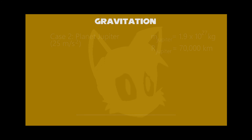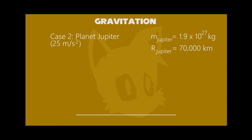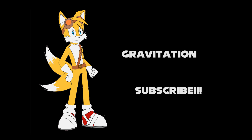And for the third case: planet Jupiter. Its speed is extremely high, with a gravity value of 25. Its mass is 1.9 times 10 to the 27th kilograms, and the radius is quite large — 70,000 kilometers. It took much less time than the two previous cases. So in the next part, we'll tell you about the formulas. Like, comment, and subscribe now.